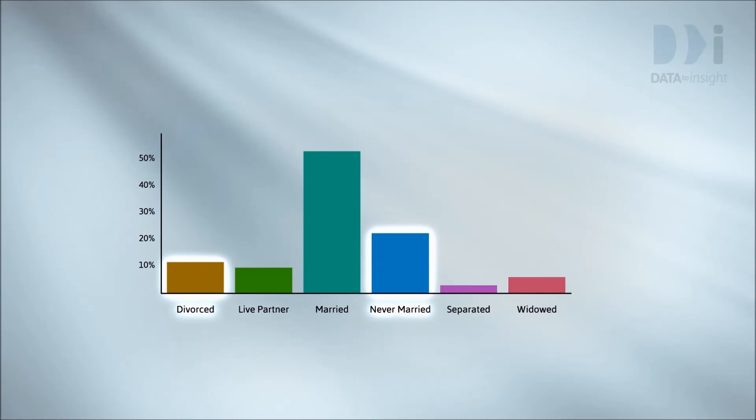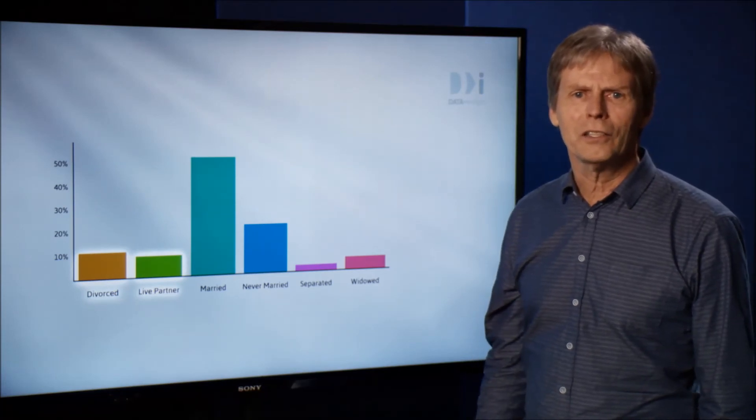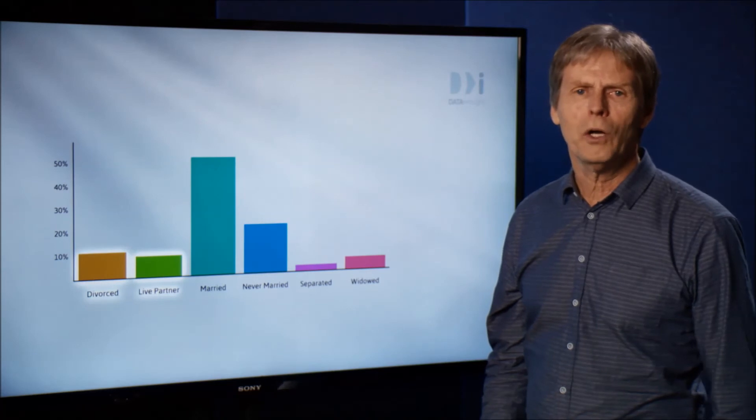So about 2.5 times as many people reported their marital status as married than as never married. Similarly, there are about half as many people in the divorced category as in the never married category, and so on. We can see that the difference in bar height between divorced and lived with partner is fairly small compared to the height of either bar. As soon as we've been educated to pay attention to these things, we can take in this sort of information very quickly and almost subconsciously.